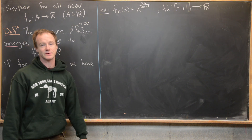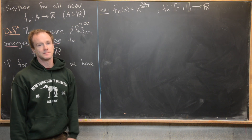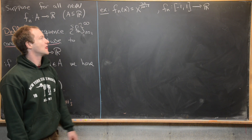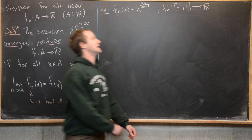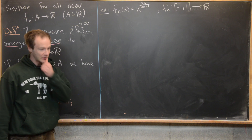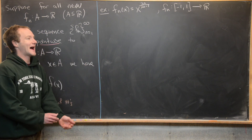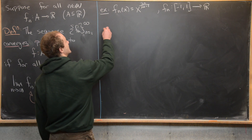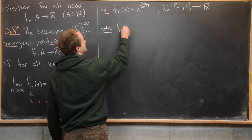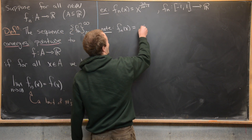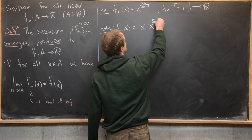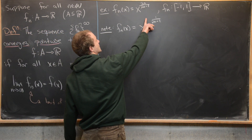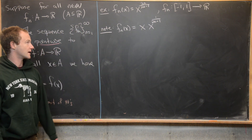For our last example, we look at f_n(x) = x^(2n/(2n−1)) on the closed interval [−1, 1]. We can use the results of our last example pretty easily. Notice that we can write f_n(x) as x times x^(1/(2n−1)), since x^1 times x^(1/(2n−1)) gives x^(2n/(2n−1)) — the 2n in the numerator comes from 1 + 1/(2n−1).